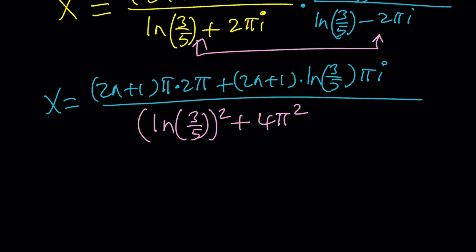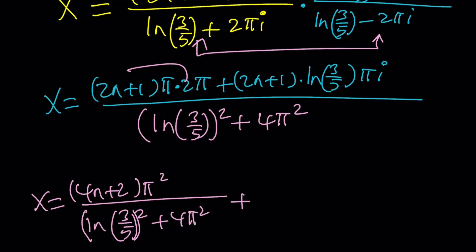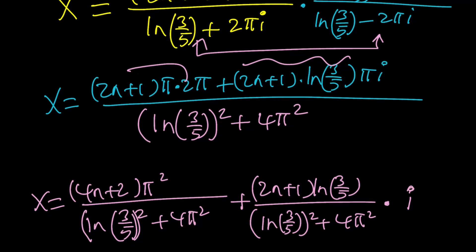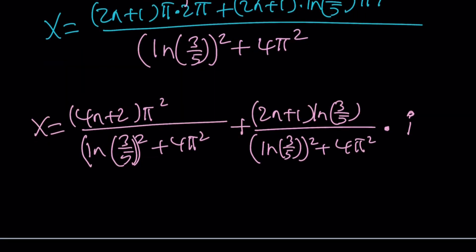So, that should be good enough. But, if you want to go a little fancy, you can separate this into 4n plus 2 pi squared divided by ln 3 over 5 squared. By the way, don't get me wrong. It's not 3 over 5 that's squared. It's the ln of 3 over 5. So, we have to use an extra set of parentheses. Plus 4 pi squared plus, the imaginary part will be divided by the denominator. 2n plus 1 times ln 3 over 5 over ln 3 over 5 squared plus 4 pi squared and times i.